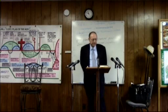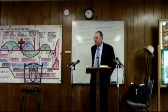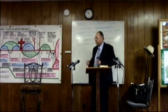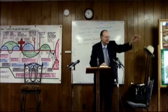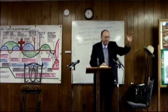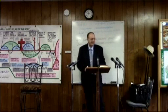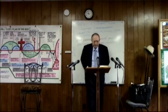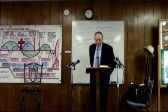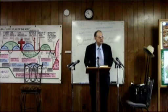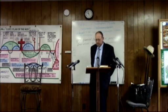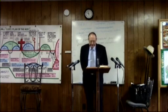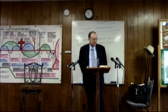That insect is Anopheles Quadrimaculatus. There are about 400 different species of mosquitoes. 'Mosquito' means 'little fly' in Spanish. There are about 400 different species, but only about 30 to 40 of these mosquitoes carry the plasmodium parasite, and it transmits it to its victims.